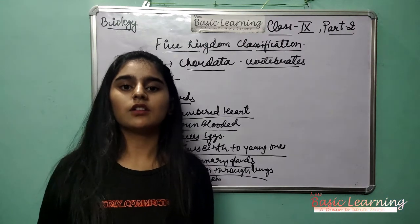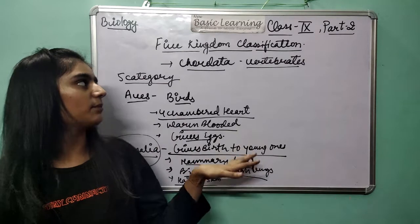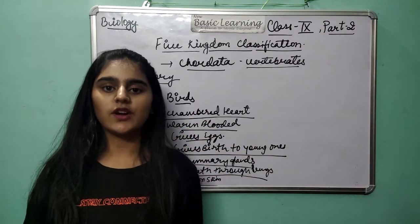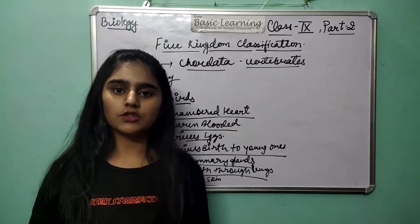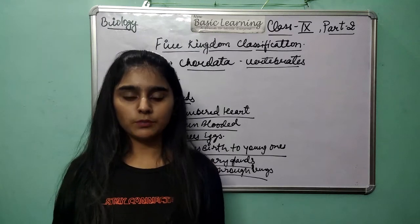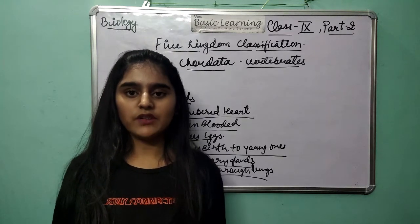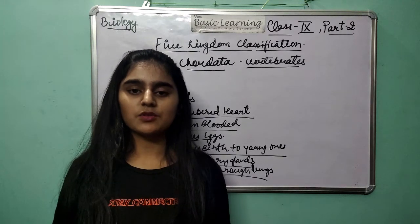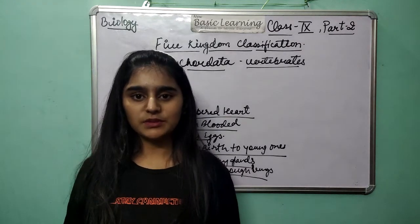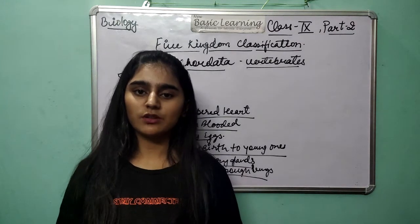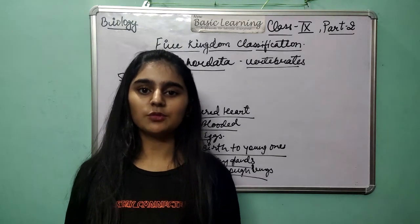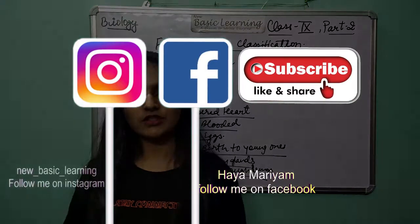So this was all about five kingdom classification. I have made Part 1 and Part 2 — if you have not seen both parts, the link for Part 1 is in the description box. Please tell me in the comments how many chambers humans have. If you like this video, hit the like button, share, subscribe to the channel, and hit the bell icon for more updates. Thank you for watching.